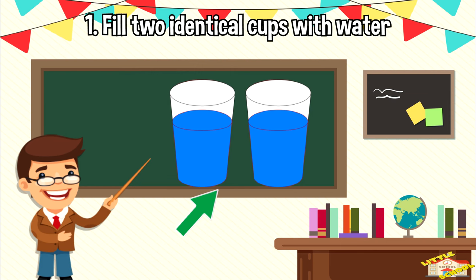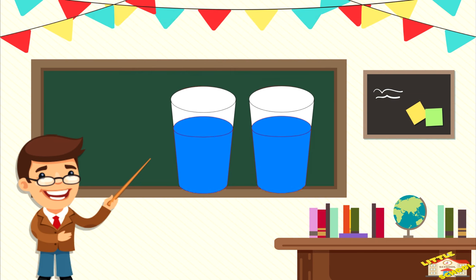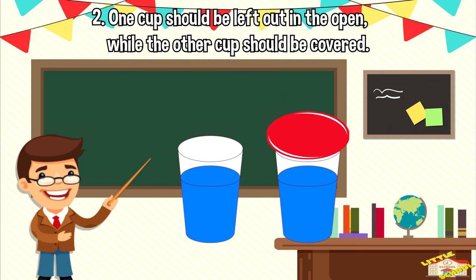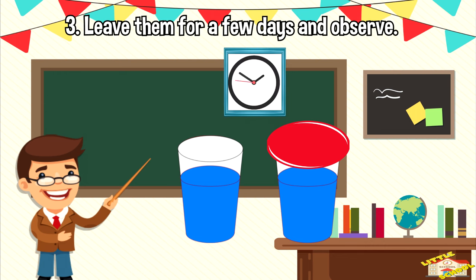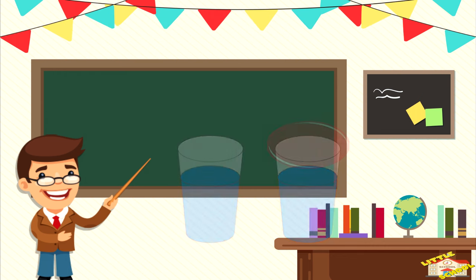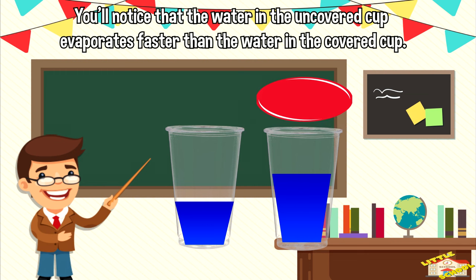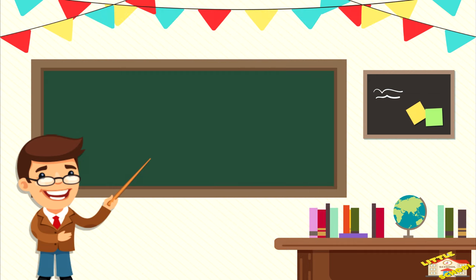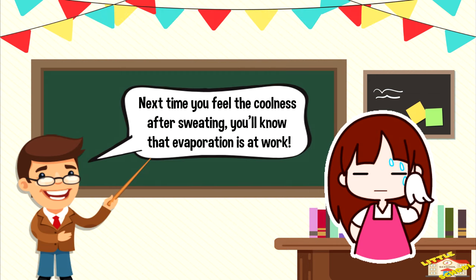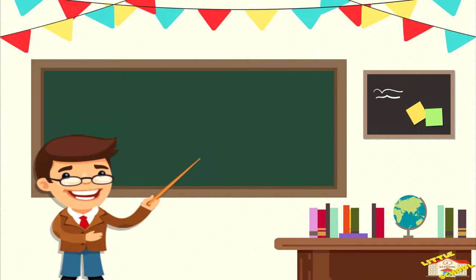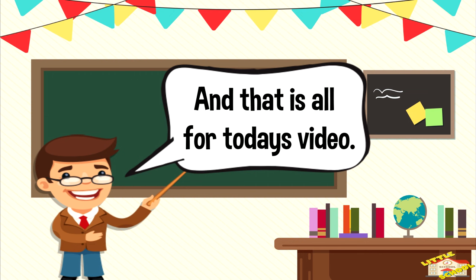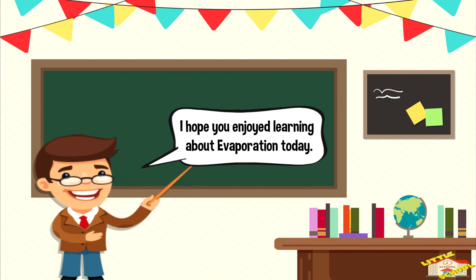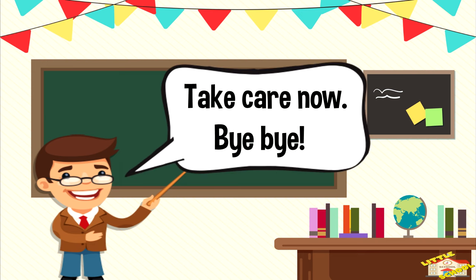Here's a fun evaporation experiment you can try. Fill two identical cups with water. One cup should be left out in the open, while the other cup should be covered. Leave them for a few days and observe. You'll notice that the water in the uncovered cup evaporates faster than the water in the covered cup. So next time you feel the coolness after sweating, you'll know that evaporation is at work!